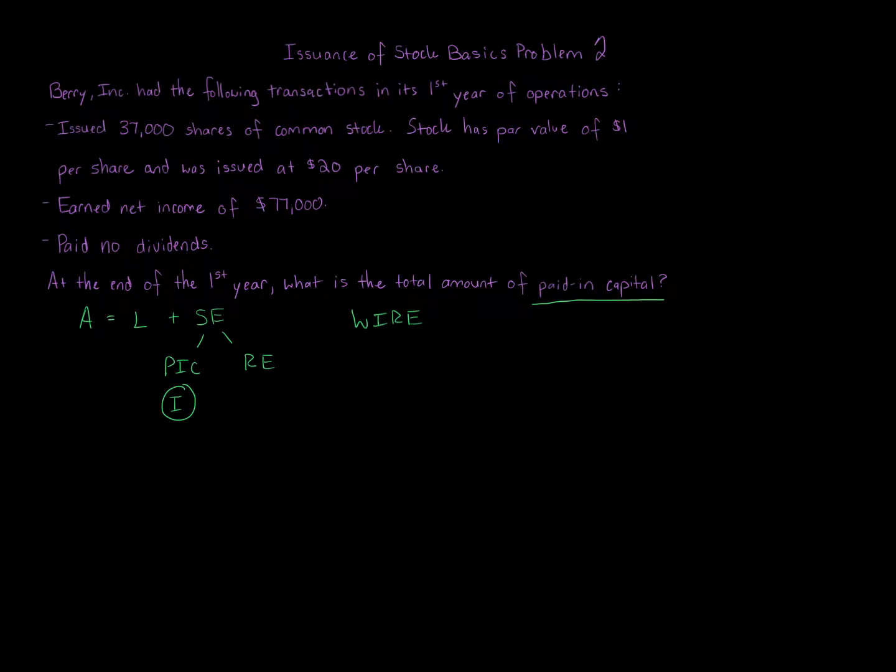Then you have the R and E, which is revenue and expenses. The I, the investments—when a corporation issues stock, whether it's common or preferred, when it raises money through issuance of stock by getting new owners or sending stock to the existing owners, that's going through the paid-in capital section.